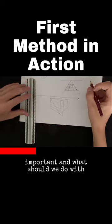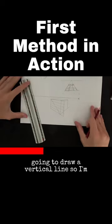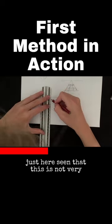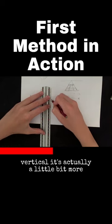What should we do with these intersections? We're just going to draw a vertical line. I'm seeing here that this is not very vertical, it's actually a little bit more angled.